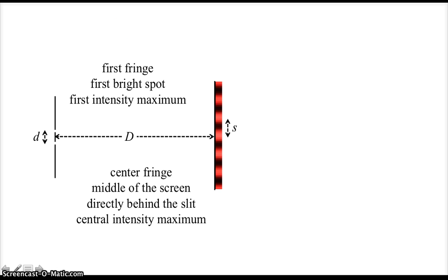There is an equation that tells us how these three things are related. Here's our equation. The location of that first fringe, S, the position of the fringe, is equal to the wavelength, lambda, times big D over little d.